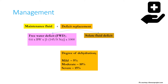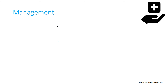The degree of dehydration is clinically assessed as: mild = 5% of body weight, moderate ≈ 10%, and severe ≈ 15%. For malnourished children, as is common in India, these figures are 5%, 7.5%, and 10% respectively.